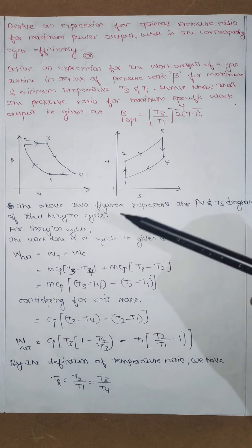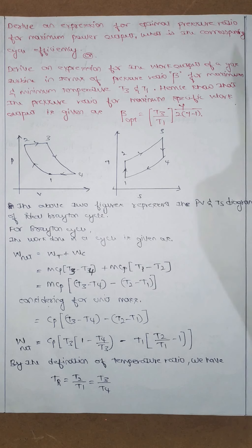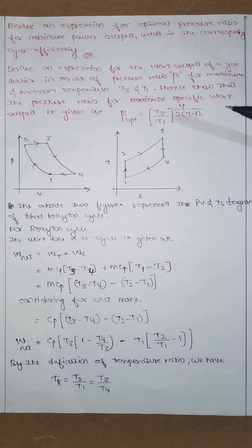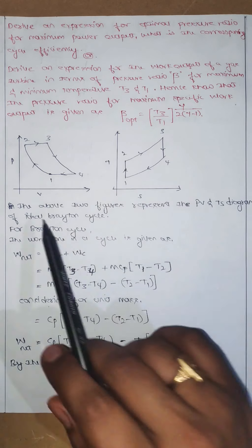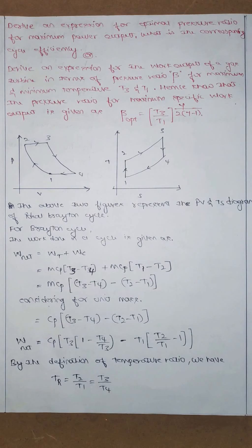This derivation is for the ideal Brayton cycle. If the question asks for the actual Brayton cycle, that is a separate derivation covered in the next video. For the ideal Brayton cycle, just write down the PV diagram and TS diagram.